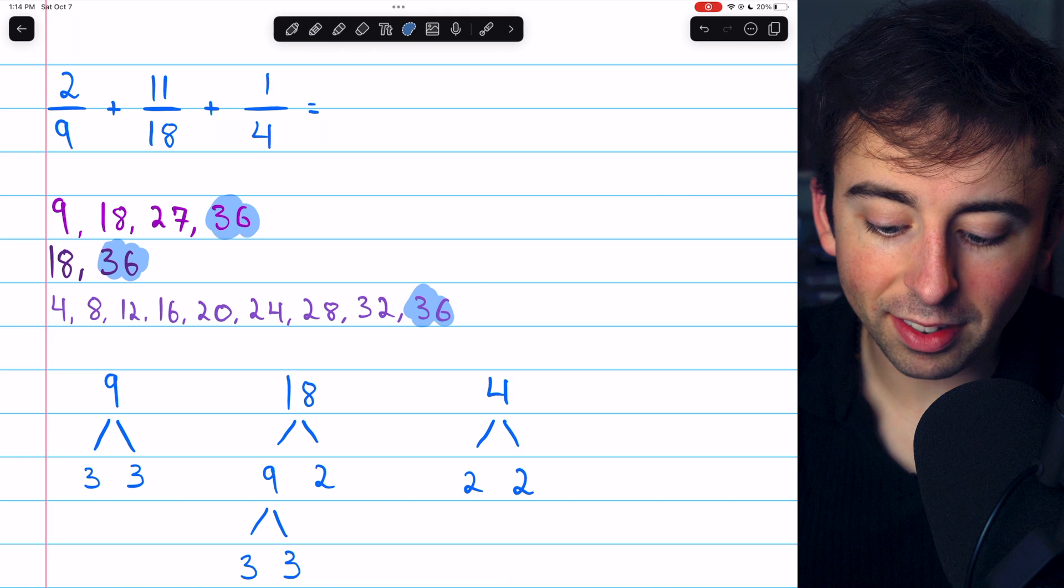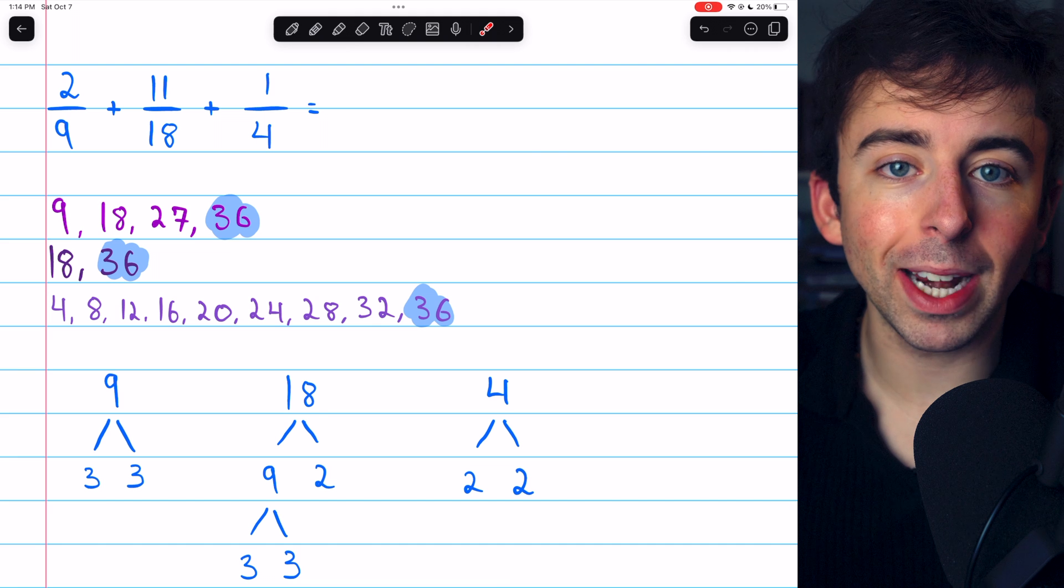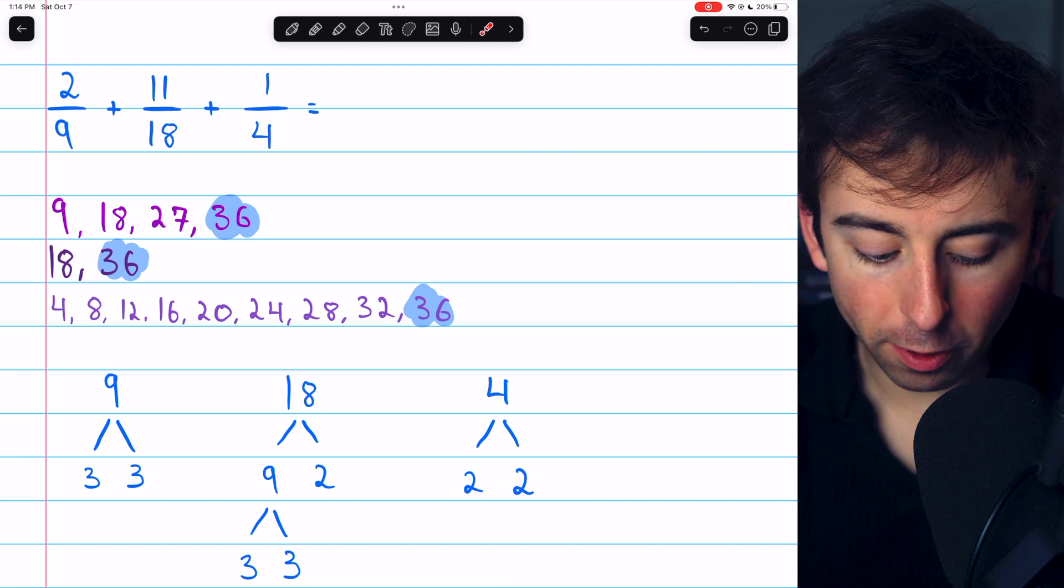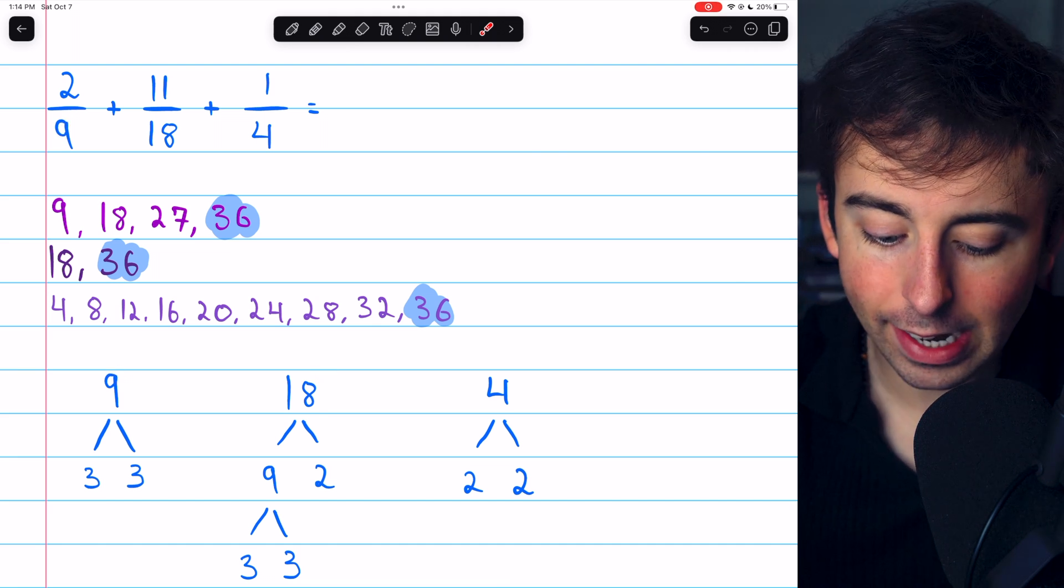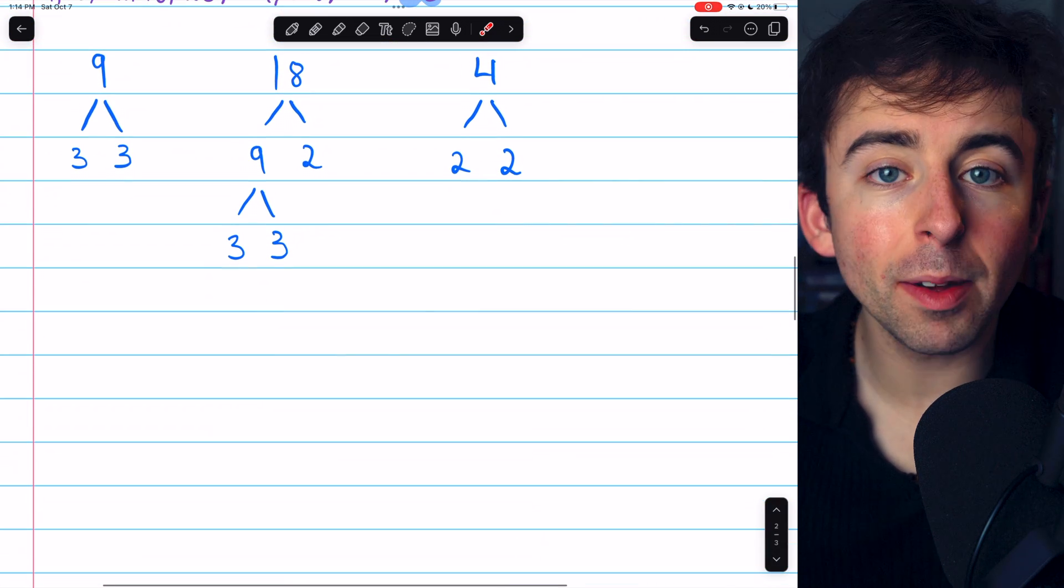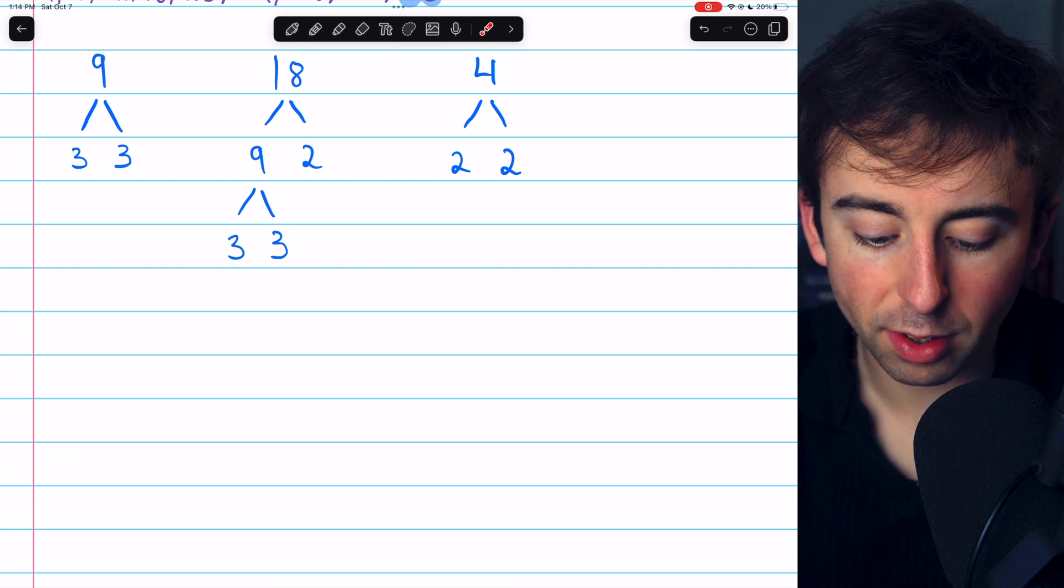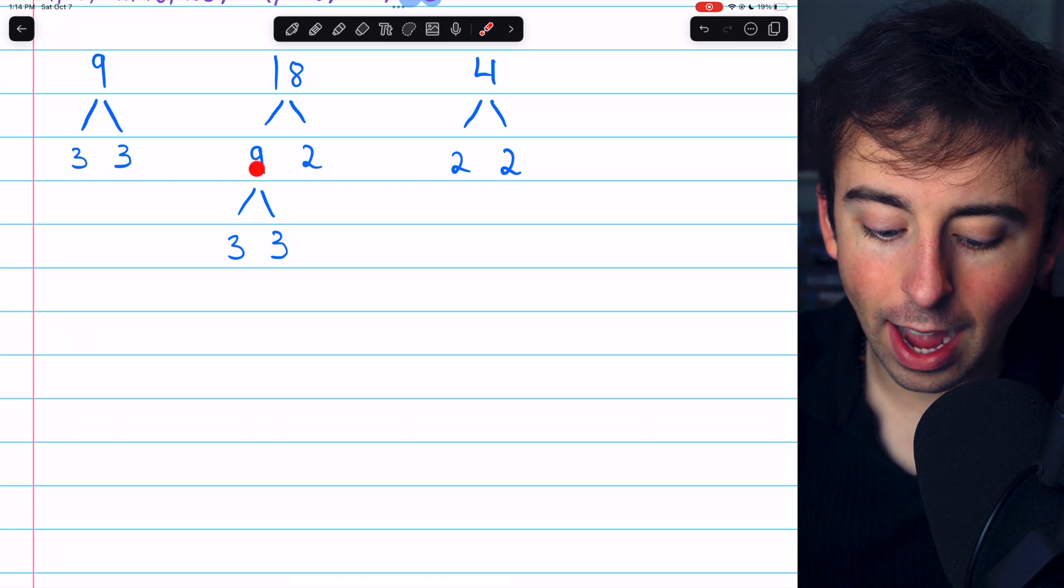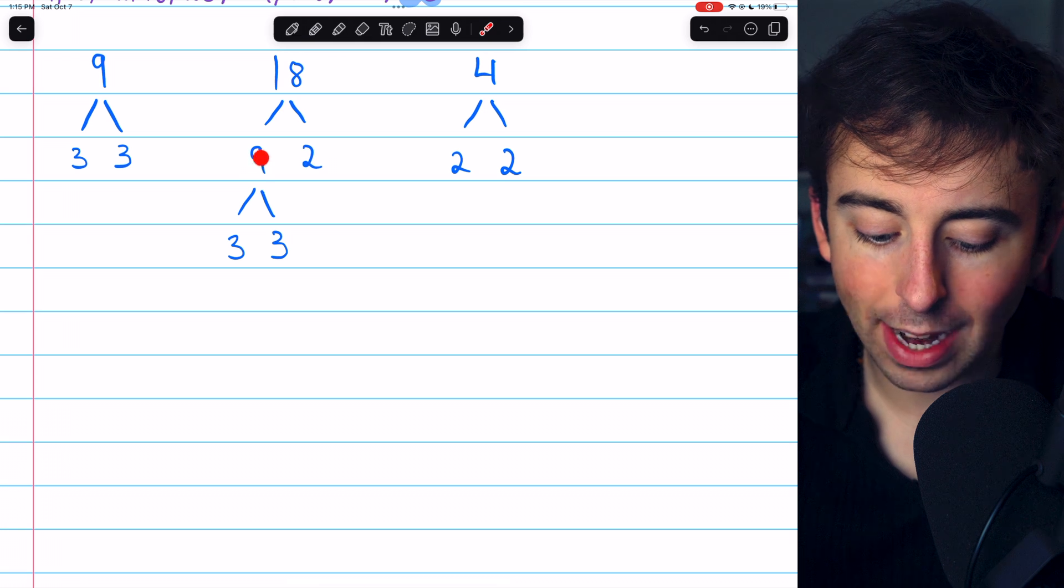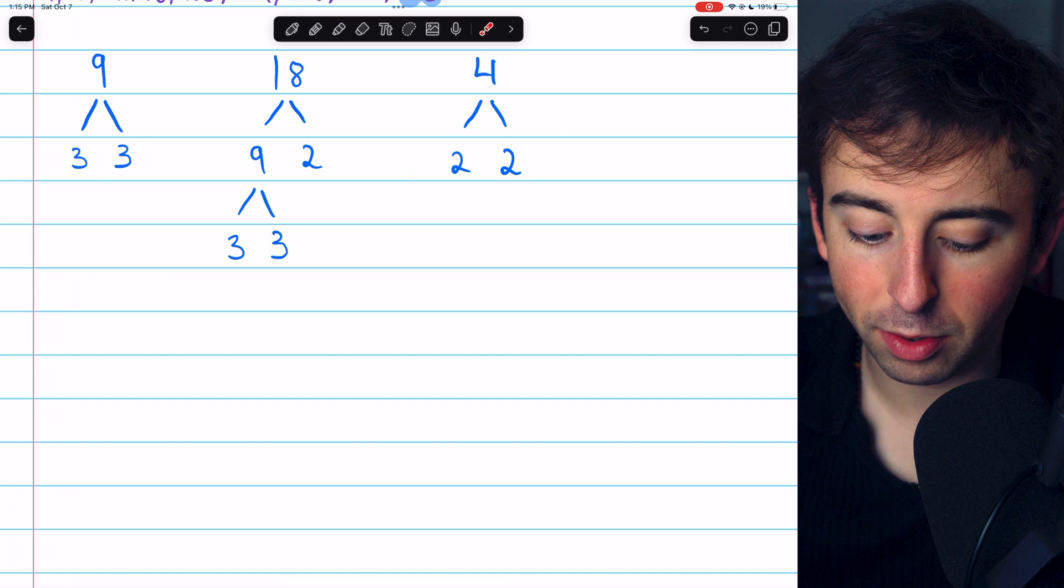Because of how long this can take, it is sometimes a better method to look at the prime factors of the denominators in question. So we take our denominators, 9, 18, and 4, and write a factor tree to try to break them down into their prime factors. 9, we know, is 3 times 3. 18 is 9 times 2. And we can then break down 9 into 3 times 3. And 4 is just 2 times 2.